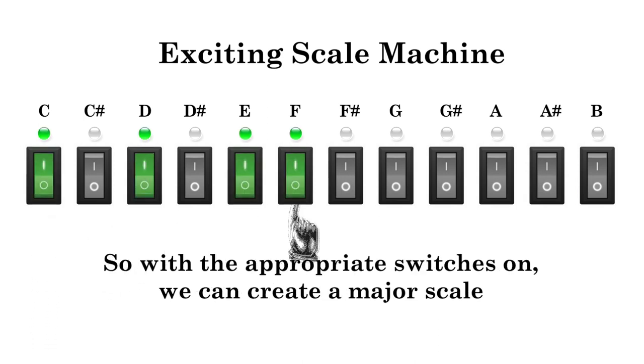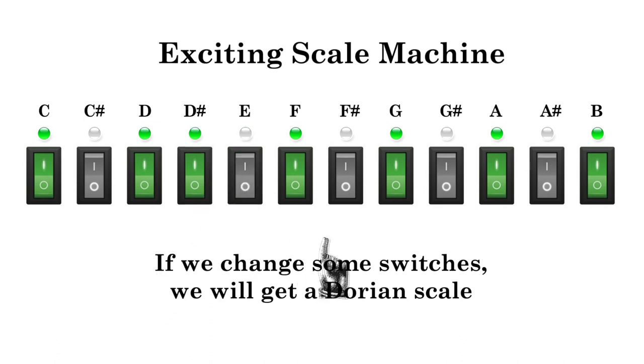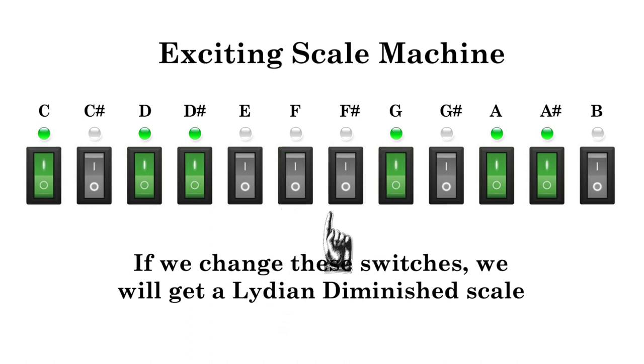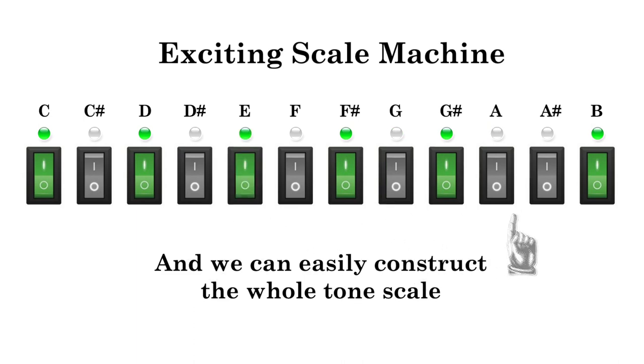So with the appropriate switches on, we can create a major scale. If we change some switches, we will get a dorian scale. If we change these switches, we will get a lydian diminished scale. And we can easily construct the whole tone scale.